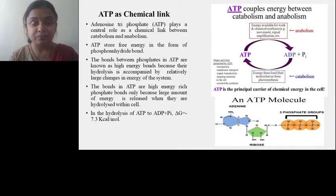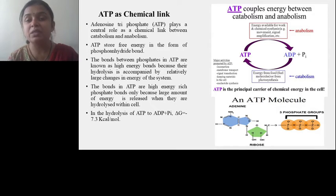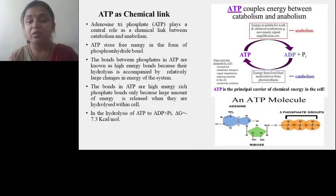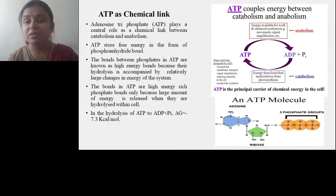In the hydrolysis of ATP to ADP plus inorganic phosphate, delta G of -7.3 kilocalories per mole is produced. In this diagram we can see that ATP couples the energy between catabolism and anabolism. ATP is utilized during anabolism where the terminal gamma phosphate is broken down and the energy stored in the bond is released and utilized for new bond formation. While when a complex molecule is broken down, the energy released is restored in the phosphoanhydride bond in the form of ATP, where ADP and inorganic phosphate combine to form ATP.